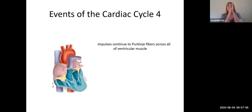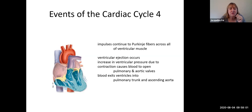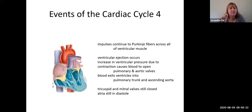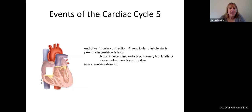Then the impulse continues to the Purkinje fibers all across the ventricular muscle, and all the muscle contracts. Ventricular ejection occurs — blood pushes the pulmonary and aortic valves open and exits the ventricles into the pulmonary trunk and the ascending aorta. Notice the tricuspid and mitral valves are still closed because of the pressure in the ventricles, and the atria are still in diastole.